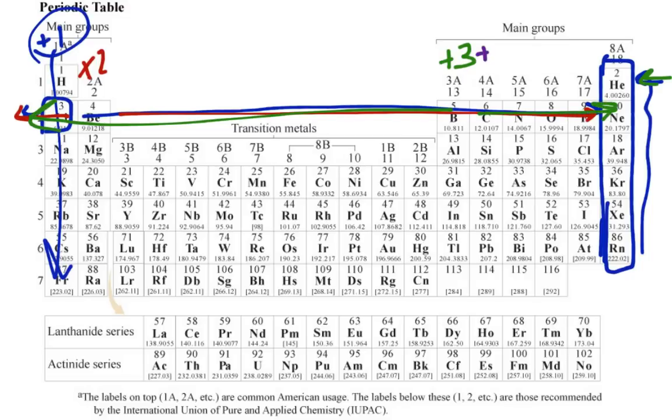This row is kind of the fun row because it is right in the middle. It can go either way. It can either gain four to look like neon, or it can lose four to look like helium. So they are plus or minus. Whatever they need to be, they will be. The next row will be minus three because it's easier for him to lose three to look like neon than it is to gain five to look like helium.